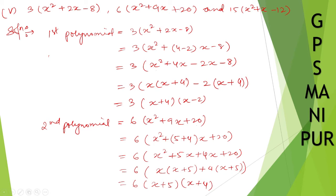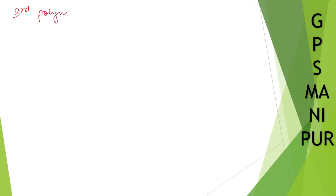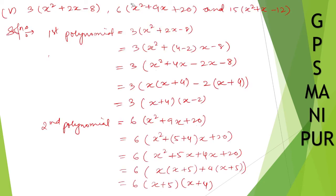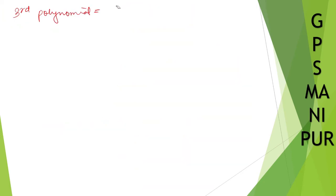Now let me do the third polynomial. The third polynomial is equal to 15x² + x - 12.